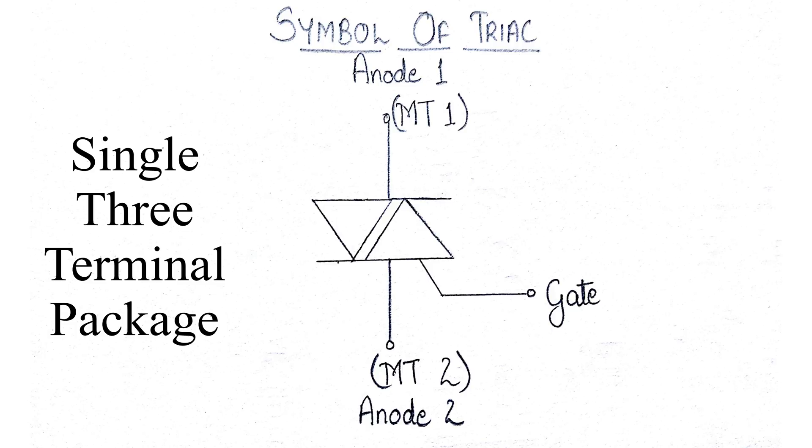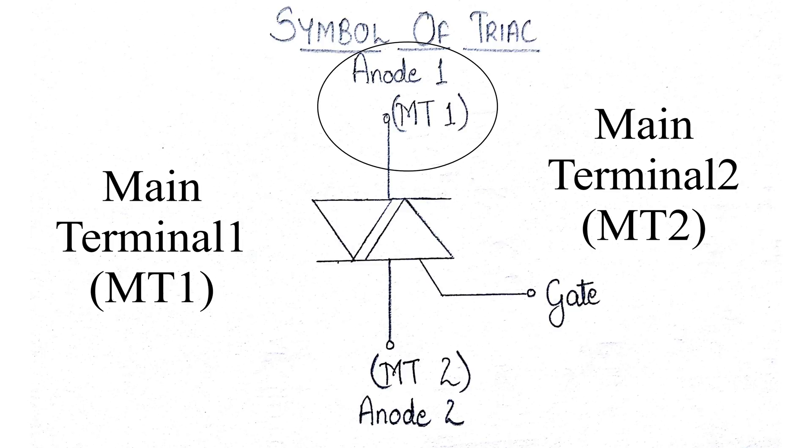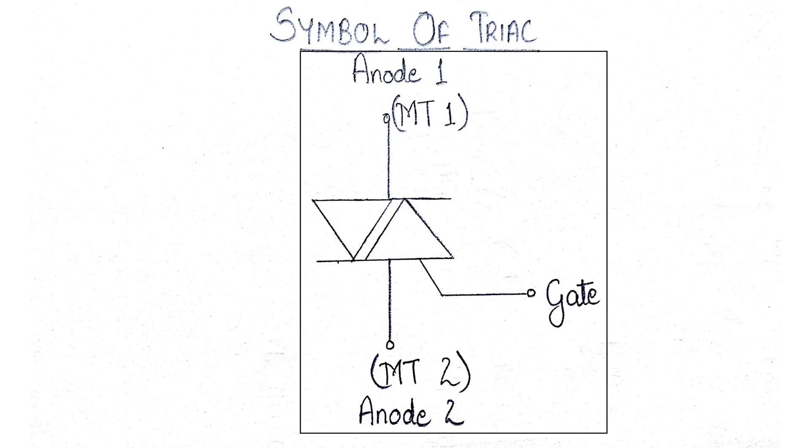Since a TRIAC conducts in both directions of a sinusoidal waveform, the concepts of anode and cathode terminals used to identify the main power terminals of a thyristor are replaced with MT1 for main terminal 1 and MT2 for main terminal 2, with the gate terminal G referenced the same.